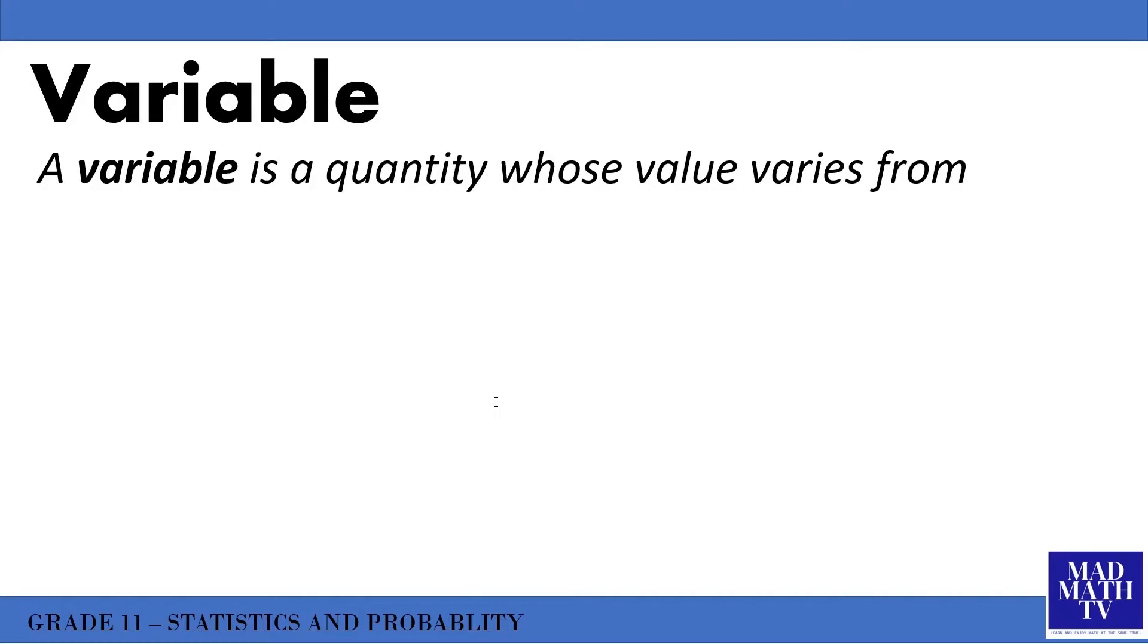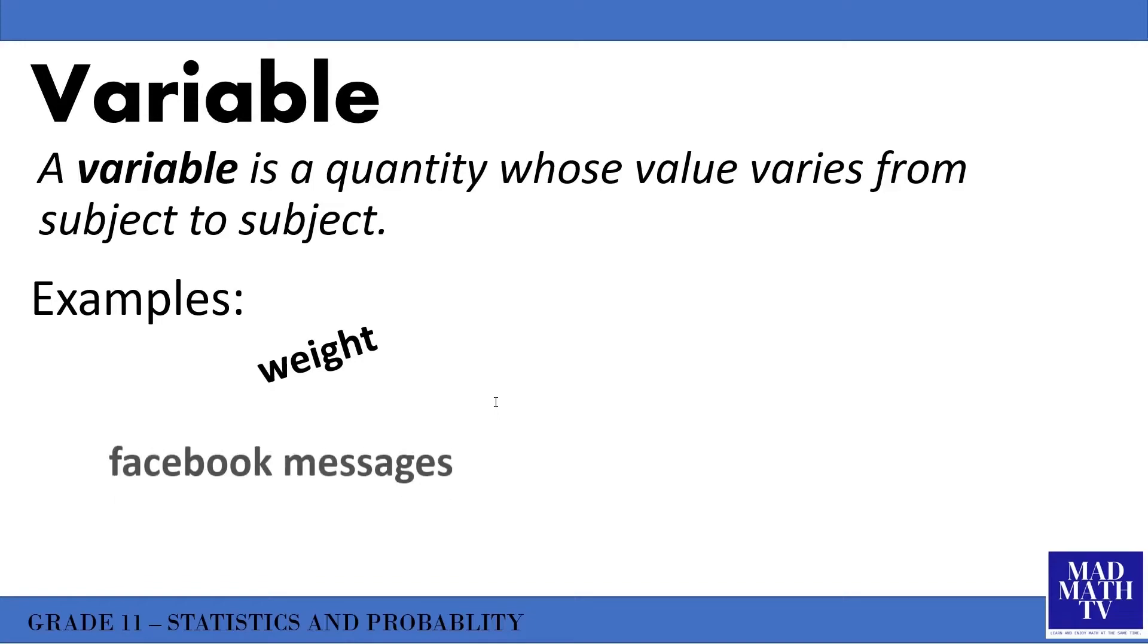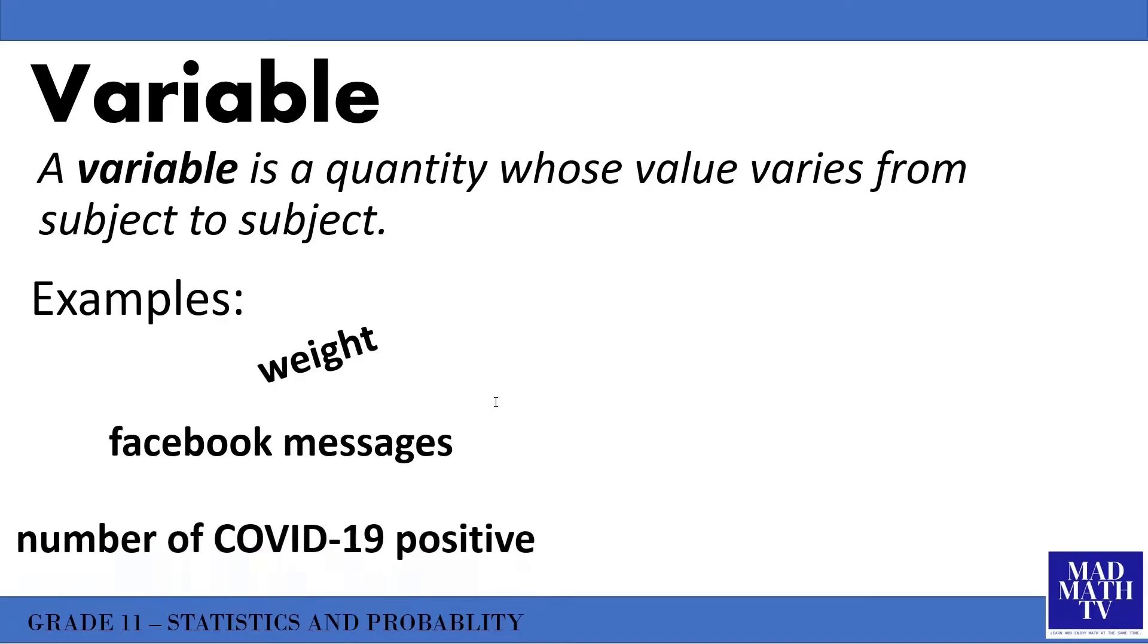A variable is a quantity that varies from subject to subject, a characteristic that changes or varies over time. For example, the weight of a person which varies from person to person - I'm 70 kilograms, you're probably 50 kilograms. The Facebook messages that you receive per day - today you can receive 10 messages, tomorrow 15 messages. The COVID cases - yesterday we had 22,000 positive cases, tomorrow it could be higher or lower.